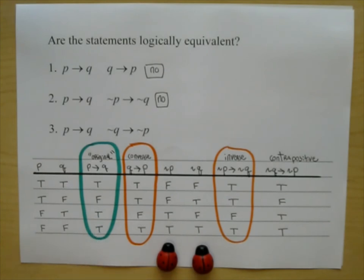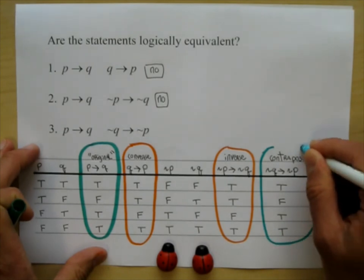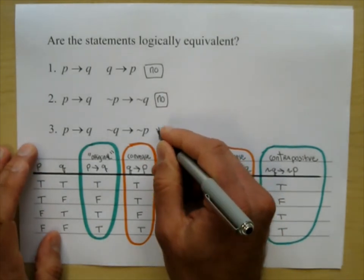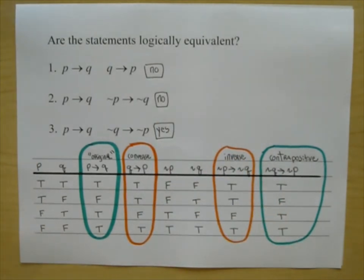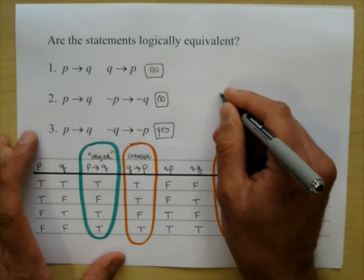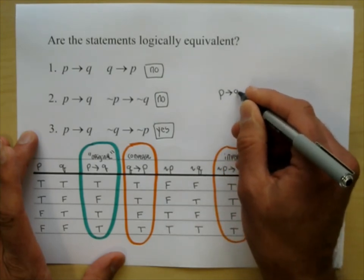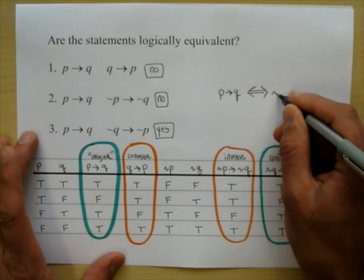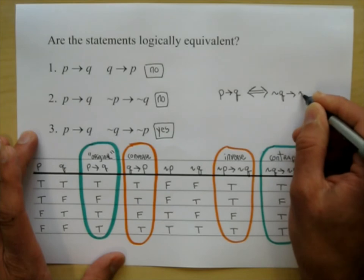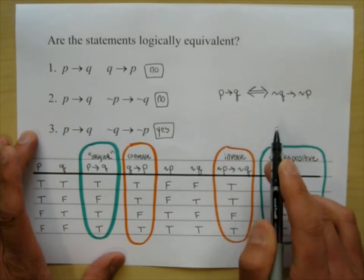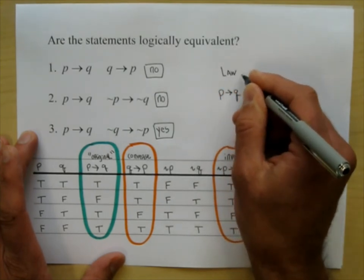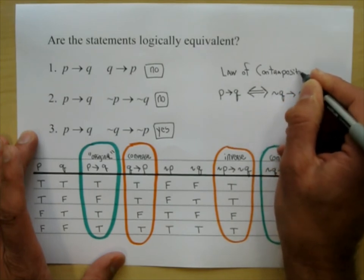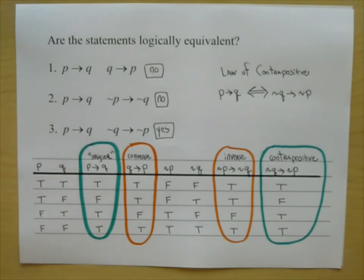So I'll circle this one in green — the answer is yes. That tells us: 'if P then Q' is logically equivalent to 'if not Q then not P.' This is very important — it's called the law of contrapositive, and it's used in logical arguments.